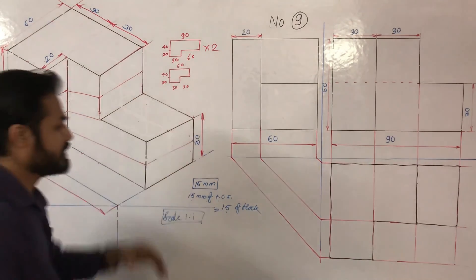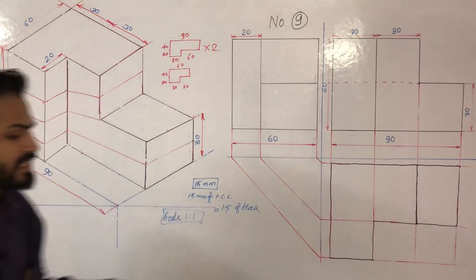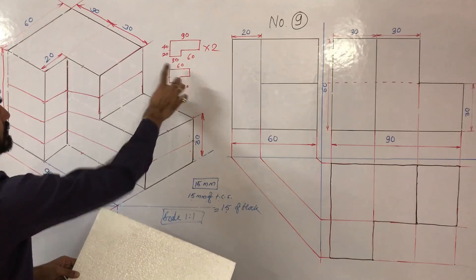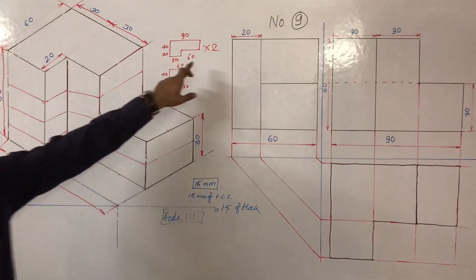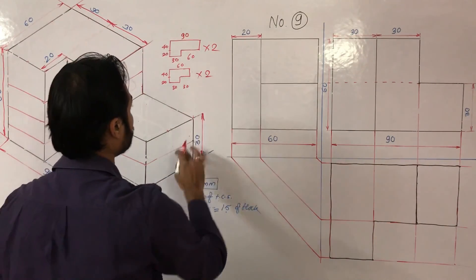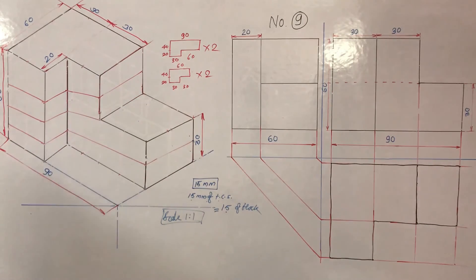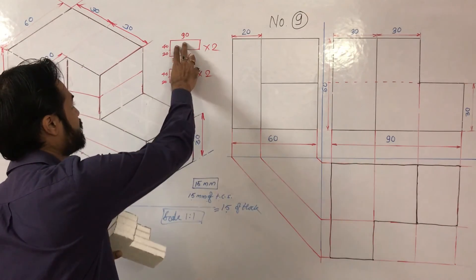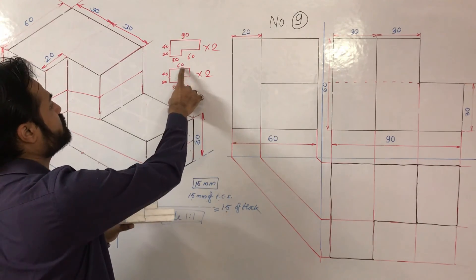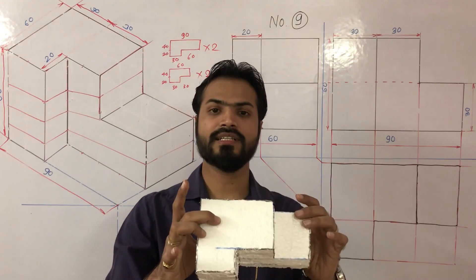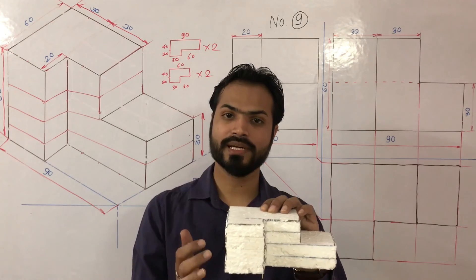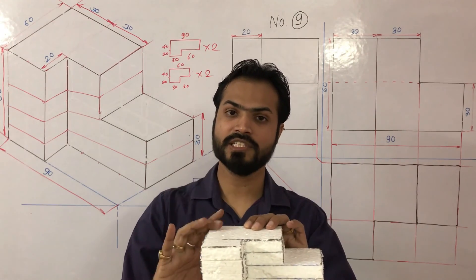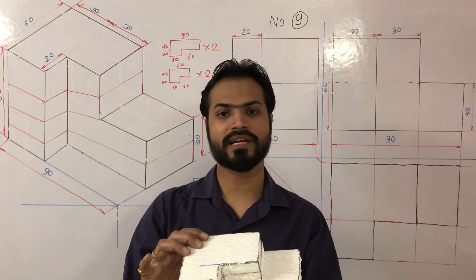After doing this, mark these shapes on the thermocol sheet. The first two plates have this shape, and the third and fourth have this shape. After cutting, arrange them: first plate, second plate, third and fourth. Mark them, cut them, and arrange them. For final fixing, use all-pin or fevicol. Then show the visible corners and edges of the machine block using a dark marker — dark black or blue marker.